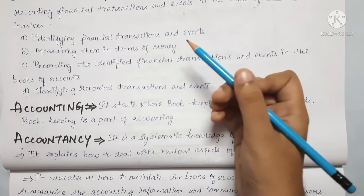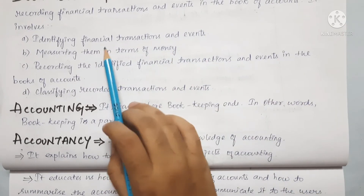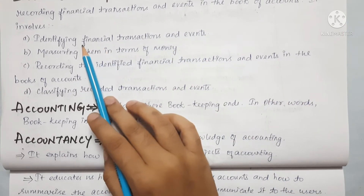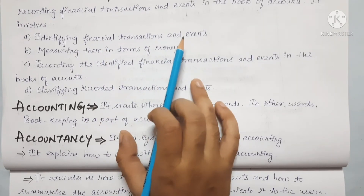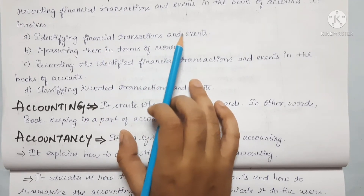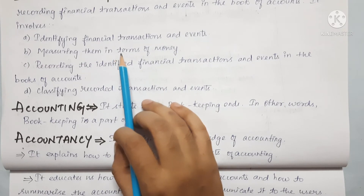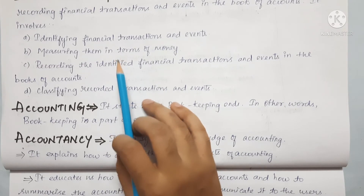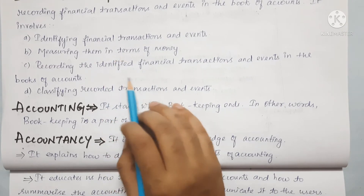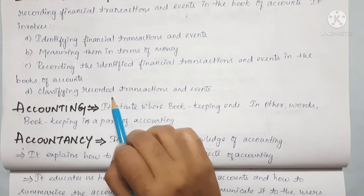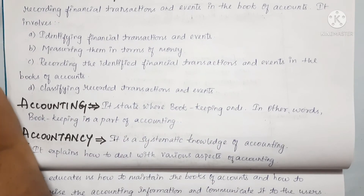In bookkeeping, we discuss these points in the journal. The process involves recording and identifying financial transaction events, measuring money-related items, and then classifying the recorded transactions. This is what we do in bookkeeping activity.